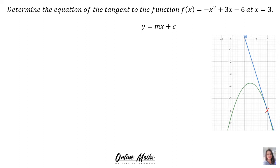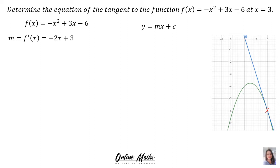We are working towards y = mx + c. The reason we find the equation of the tangent in this chapter is that when you find the derivative, the answer you get is actually the gradient of the tangent to the function. So we start with the original function, find the derivative, and the derivative is the gradient, which is -2x + 3.